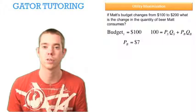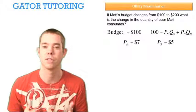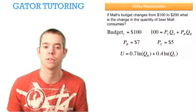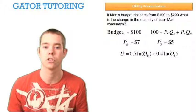The question tells us that the price of beer is $7 and that's not going to change throughout the question. The price of sandwiches is $5 and that's not going to change either. The utility function is 0.7 times the ln of QB plus 0.4 times the ln of QS, and that's not going to change.